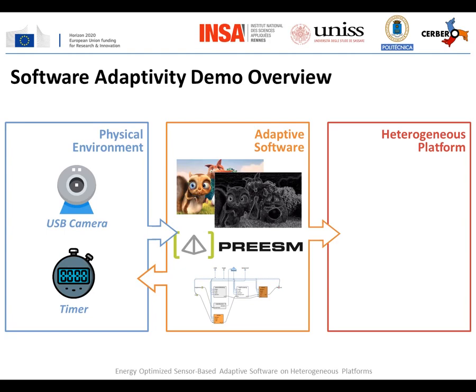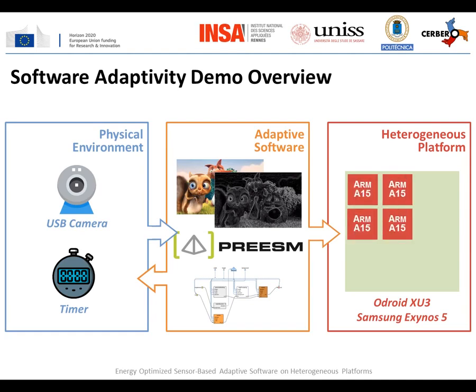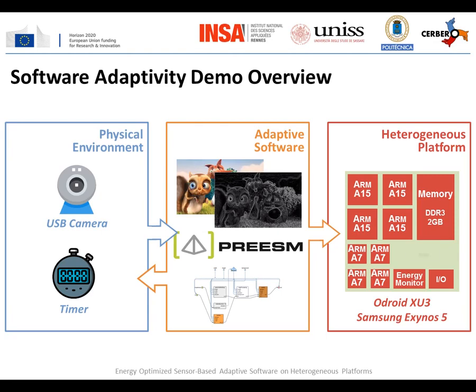The heterogeneous platform used in this demonstration is an Odroid XU3 board embedding a Samsung Exynos 5 chip. The Odroid platform embeds an ARM big.LITTLE architecture with four big A15 cores and four small A7 cores. The platform also embeds two gigabytes of memory, input-output drivers, an energy monitor, and a graphical processing unit that is not used in this demonstration.